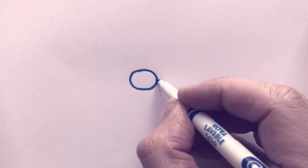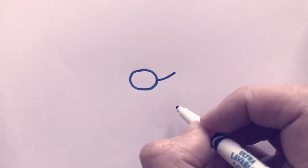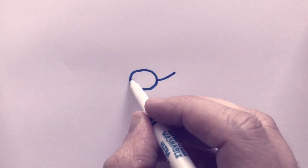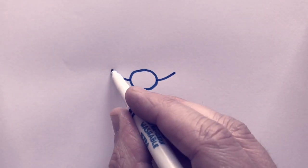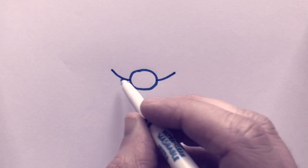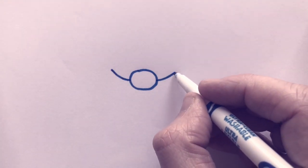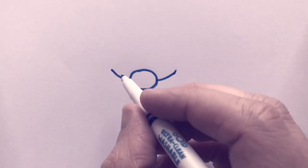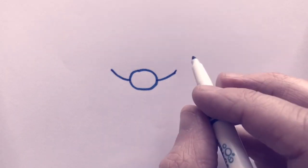We're going to do the same thing on the other side. Middle, curve outward. Try to make it symmetrical. You can see this one's a little higher. Remember, symmetry means both sides are the same, so we're trying to keep it symmetrical by keeping both sides the same.